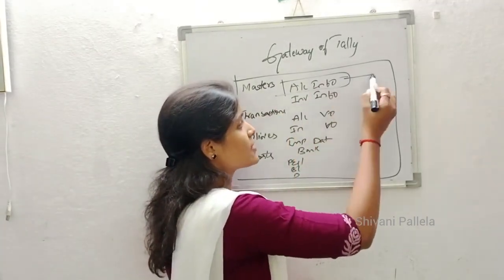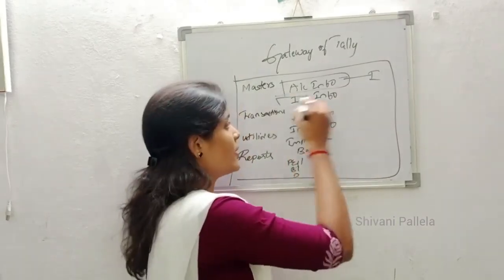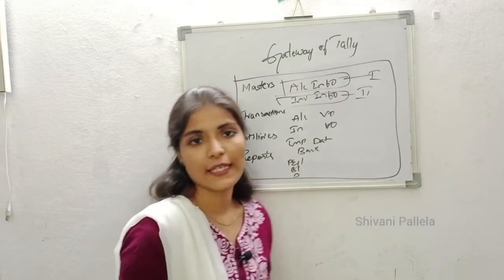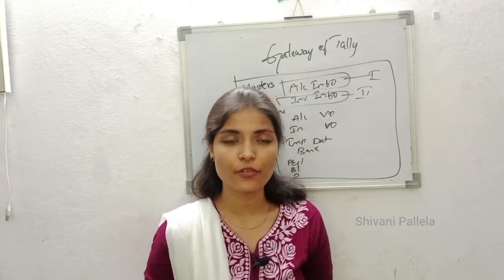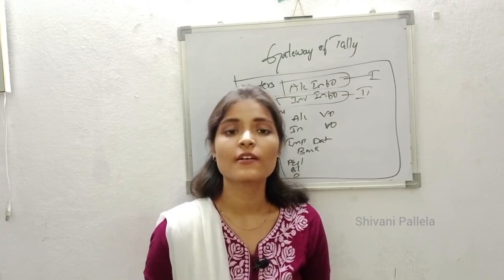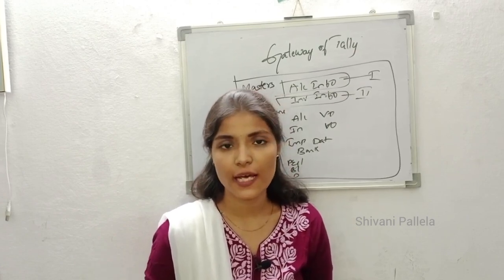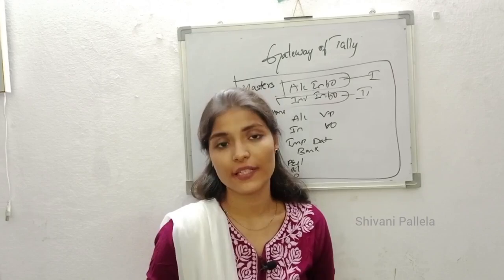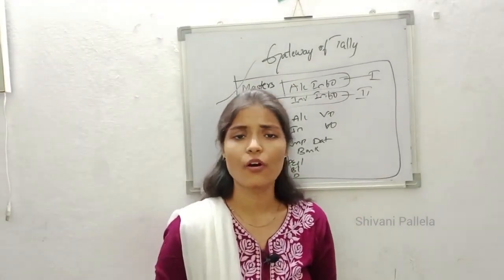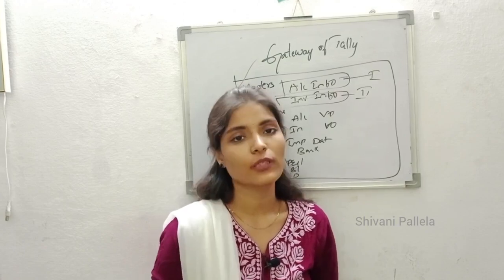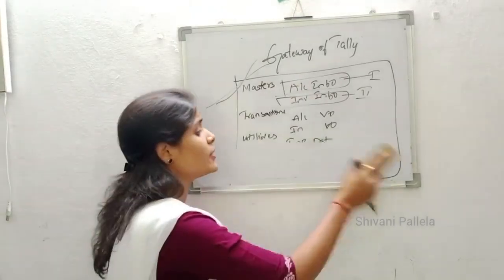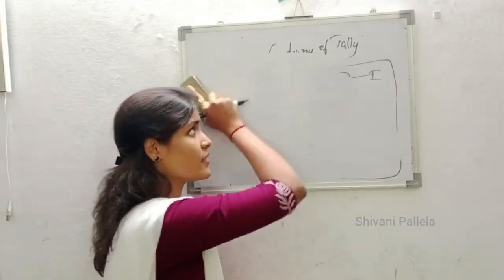Accounts Info is the first unit and Inventory Info is the second unit screens. In computerized accounting, in the first unit and second unit only you are having your screens. Third unit is purely theoretical answers, fourth unit is also theoretical, and fifth unit is also theoretical. You can draw the main menu screen — nothing will go wrong. Only unit one and unit two have screens.